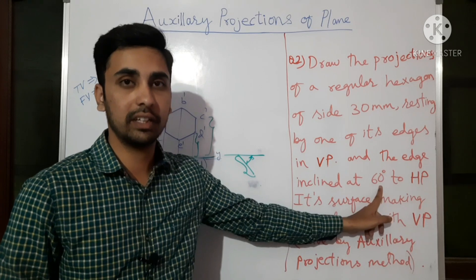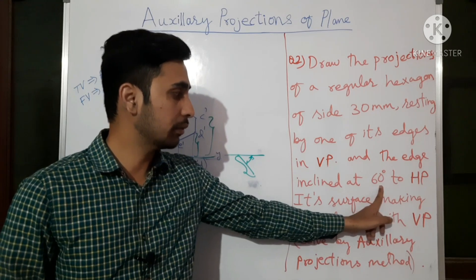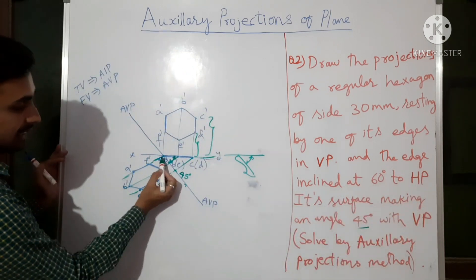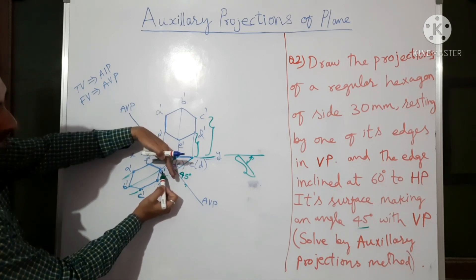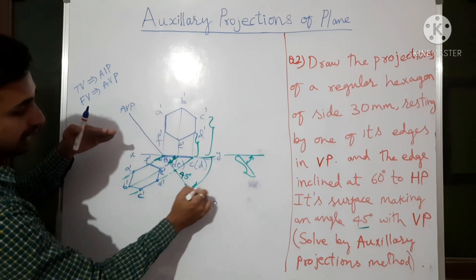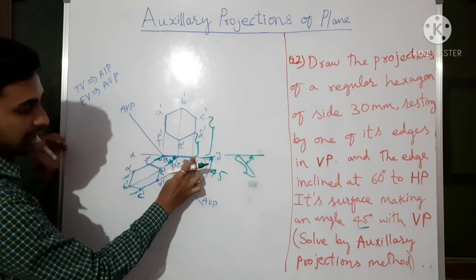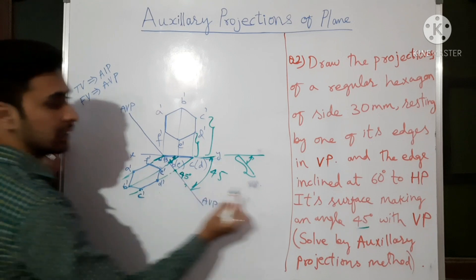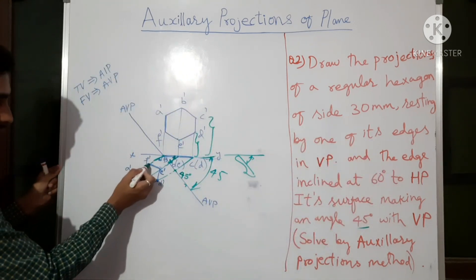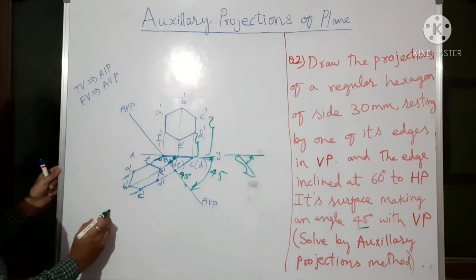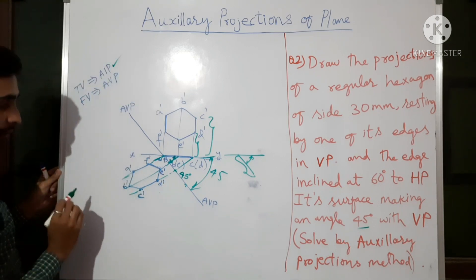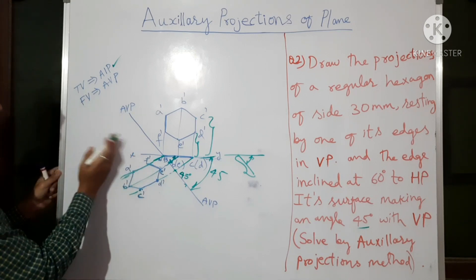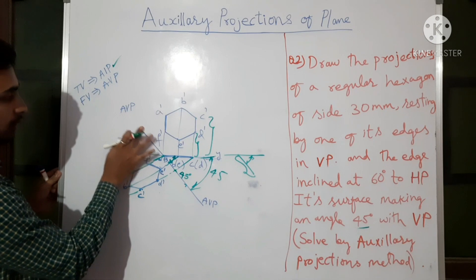The edge by which the hexagon is resting makes 60 degrees with HP. The edge that is resting is this edge. We have already applied the 45-degree surface inclination. This edge is above HP, and edge A-F should make 60 degrees with HP. We will draw another XY line, called the auxiliary inclined plane (AIP).